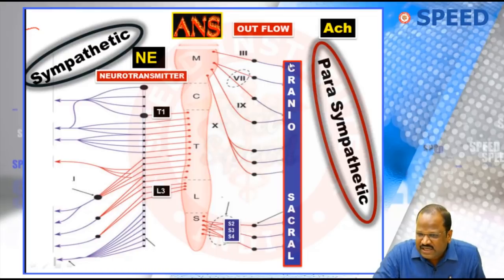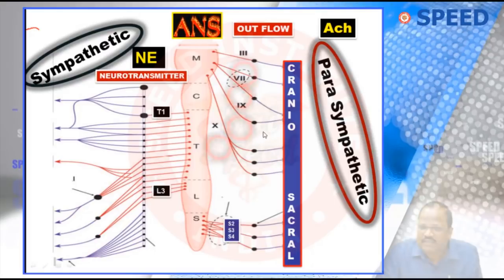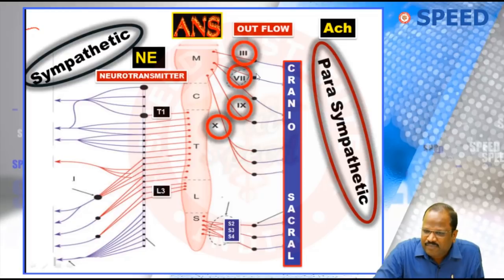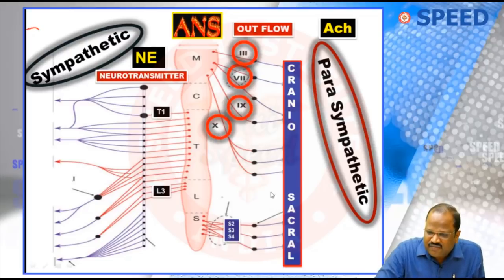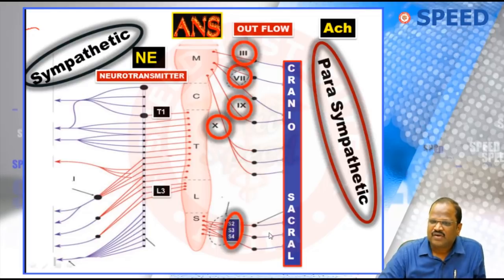When you say cranio, what are all the cranial nerves having parasympathetic activity? The cranial nerves having parasympathetic activities are 3, 7, 9, and 10. Very important. Similarly, when you say sacral fibers, what are the sacral fibers having parasympathetic activity? S2, S3, S4 — these are the sacral fibers.